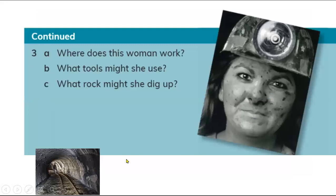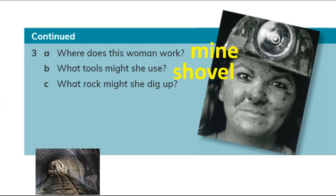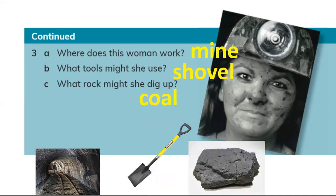Question three: look at this woman and her uniform. Where does she work? She works in the mine. What tools might she use? She needs a shovel to dig and take out coal and rocks. What rock might she dig up? You can see from her face — she is working in a coal mine.